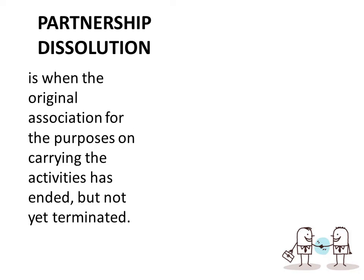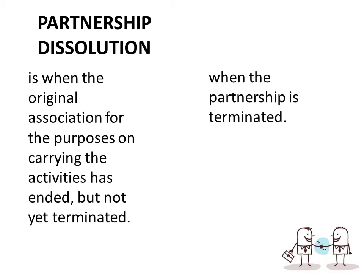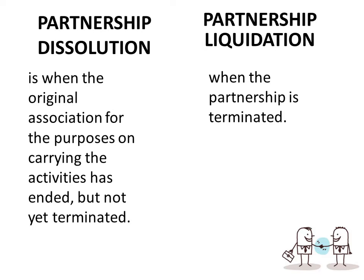Let's differentiate partnership dissolution from partnership liquidation. Partnership dissolution is when the original association for the purpose of carrying out activities has ended but not yet terminated — the partners' operations still go on. When the partnership is being terminated, it is now called partnership liquidation, meaning the partnership is now liquidated and there is a cessation of the business.